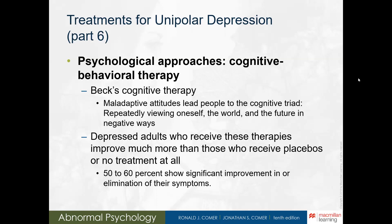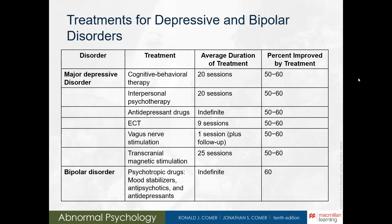Beck says that these maladaptive attitudes lead people into a cognitive triad — they repeatedly view themselves negatively, they repeatedly view the world negatively, and they repeatedly view the future negatively. Overall, about 50 to 60% of those who receive therapy show significant improvement in the elimination of their symptoms. The table here shows different depressive and bipolar disorders, the treatment, the average duration, and the percentage that can be improved by treatment — indicating that almost two-thirds of individuals are able to alleviate some symptoms and live closer to the life they love.